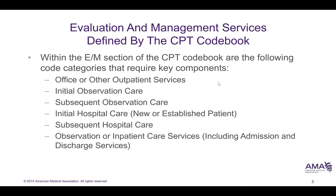Within E&M, there are code categories that require the key components. We always think of E&M as being office-based, but we also have observations — both initial and subsequent — and initial hospital care. This gets into new patient versus established patient. And then of course, if we have initial hospital care, we have subsequent hospital care. All of these things, along with observation and inpatient, require E&M coding.